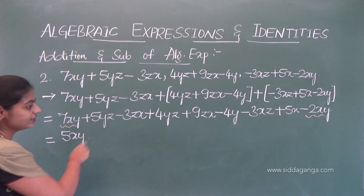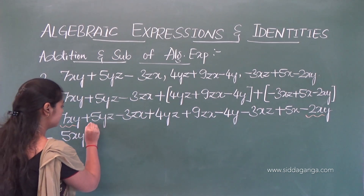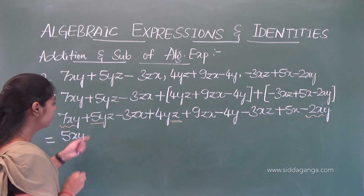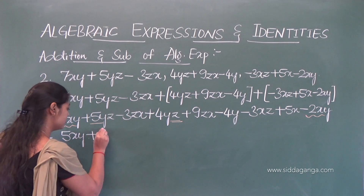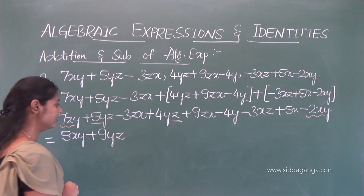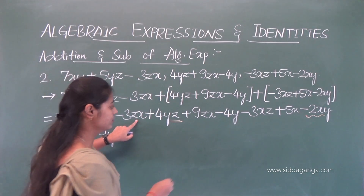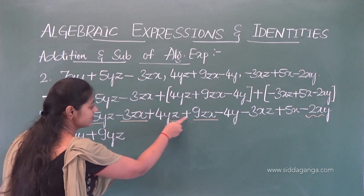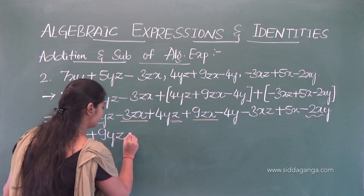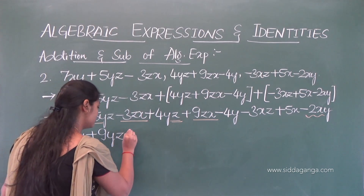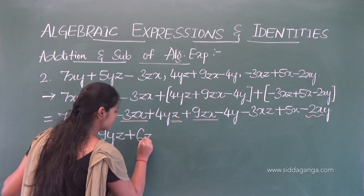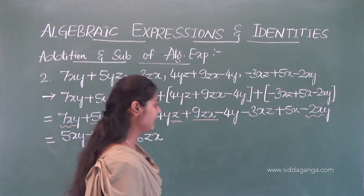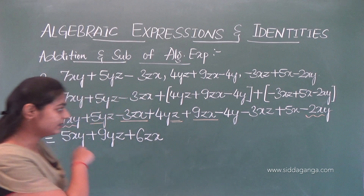For yz terms: 5yz plus 4yz equals 9yz. For zx terms: 9zx minus 3zx — one negative and one positive number — since 9 is the highest, the result is plus 6zx. The remaining terms minus 4y, minus 3xz, and plus 5x are all unlike terms.